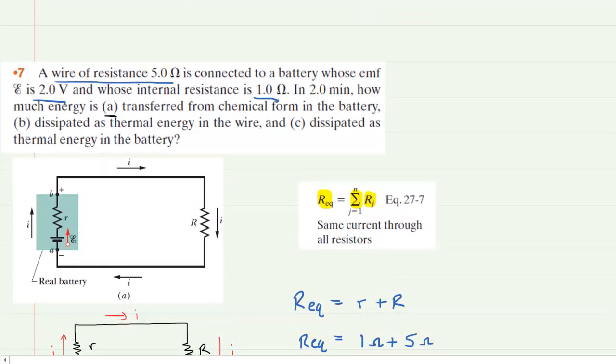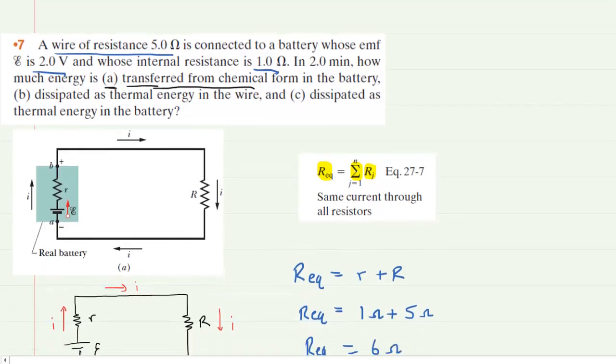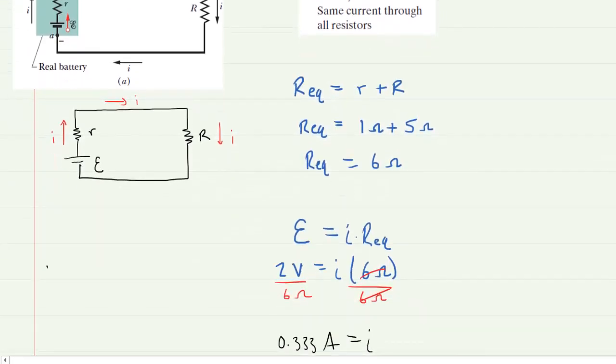We move to part A, and we are asked to calculate the energy transferred from chemical form in the battery. Now, energy, we might recall, is equal to the power multiplied by time.